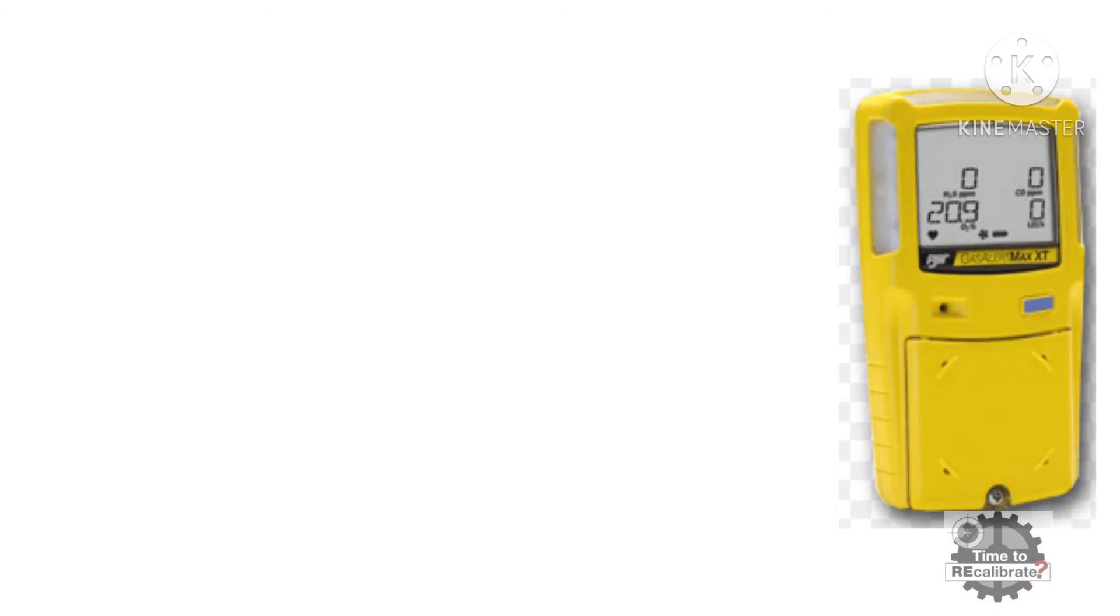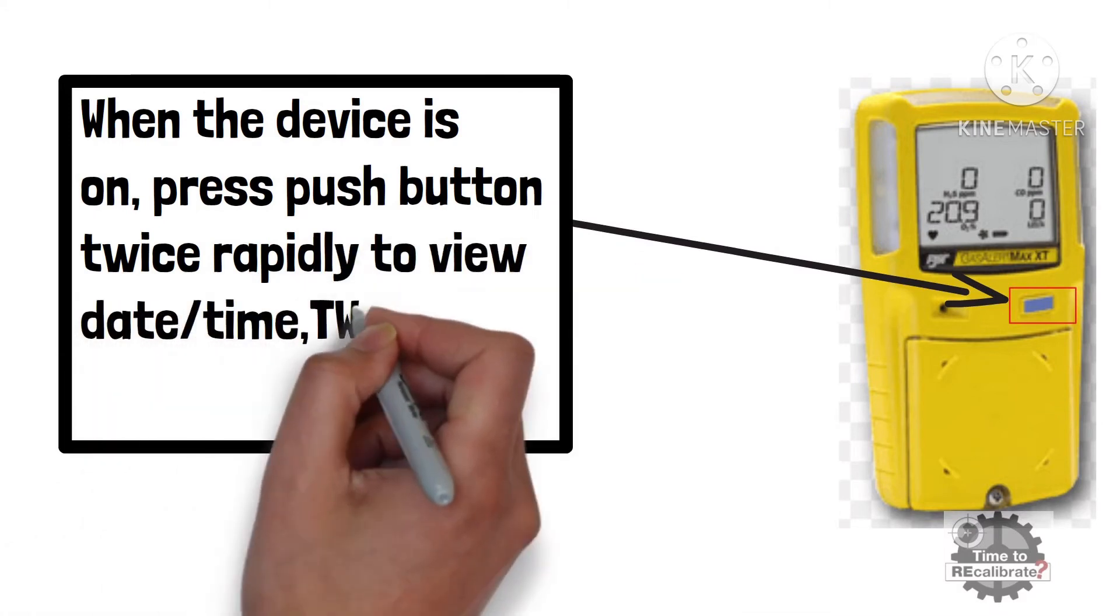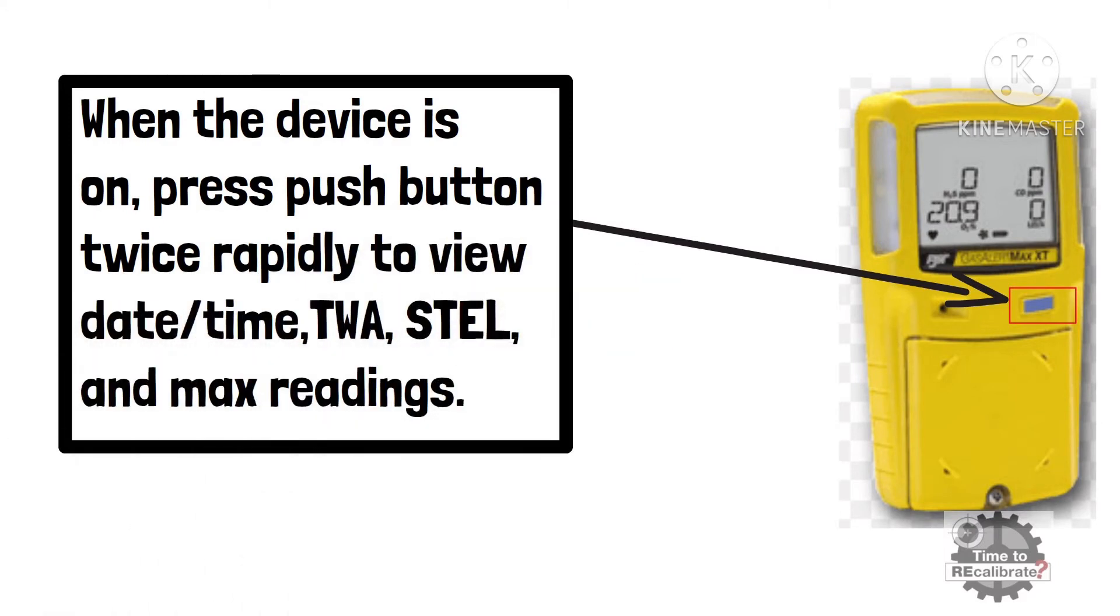When the device is in measuring mode, press push button twice rapidly to view different parameters such as date or time, time weighted average, short-term exposure limits, maximum readings, etc.